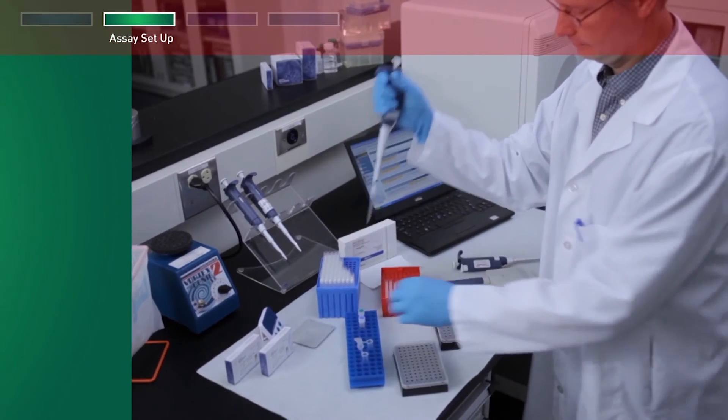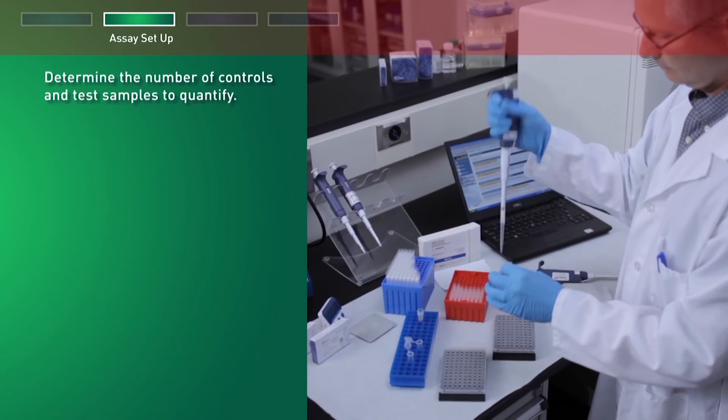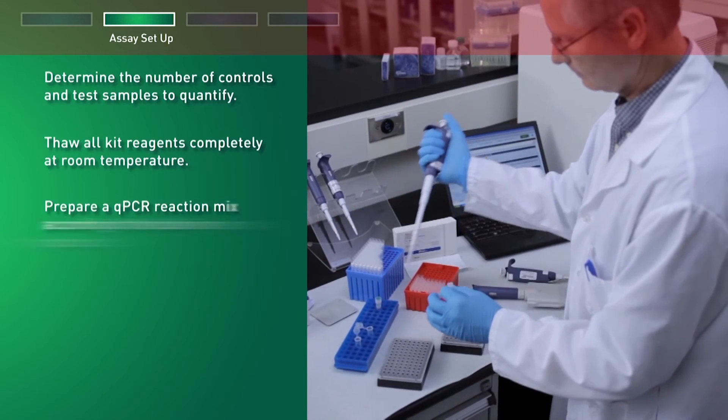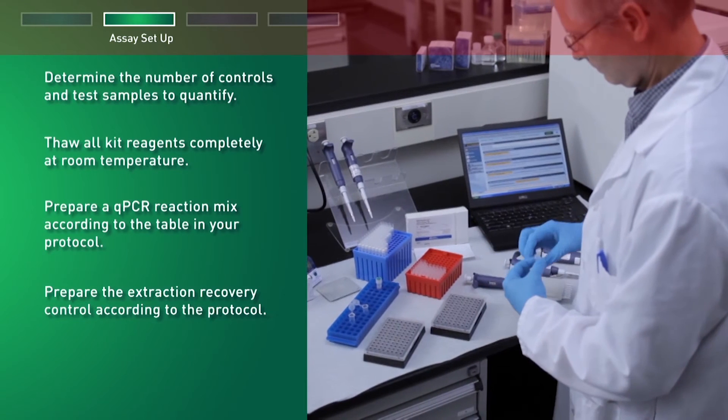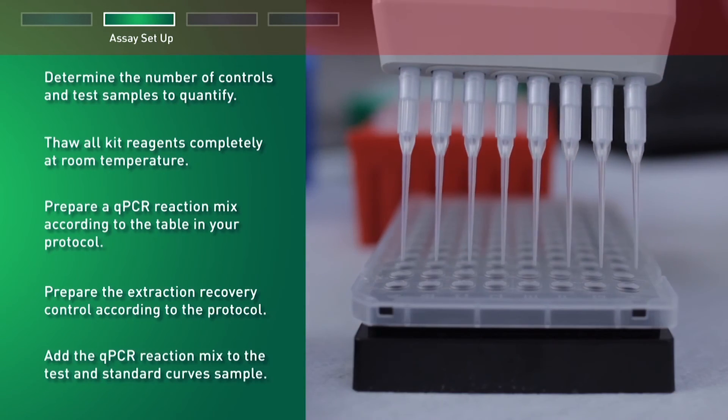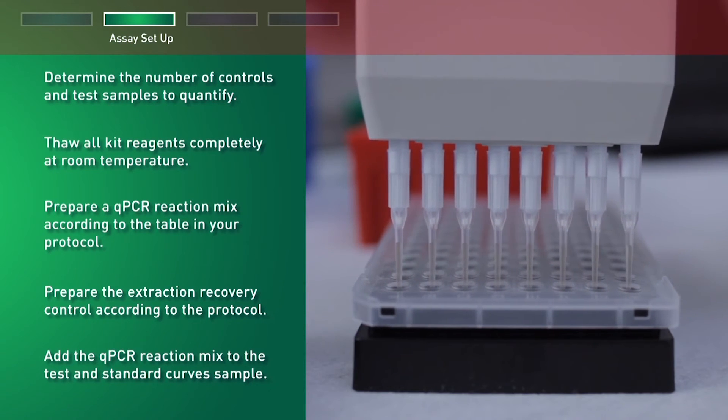First, determine the number of controls and test samples to quantify, then thaw all kit reagents completely at room temperature. Prepare a qPCR reaction mix according to the table in your protocol. Prepare the extraction recovery control according to the protocol, then add the qPCR reaction mix to the test and standard curve samples.